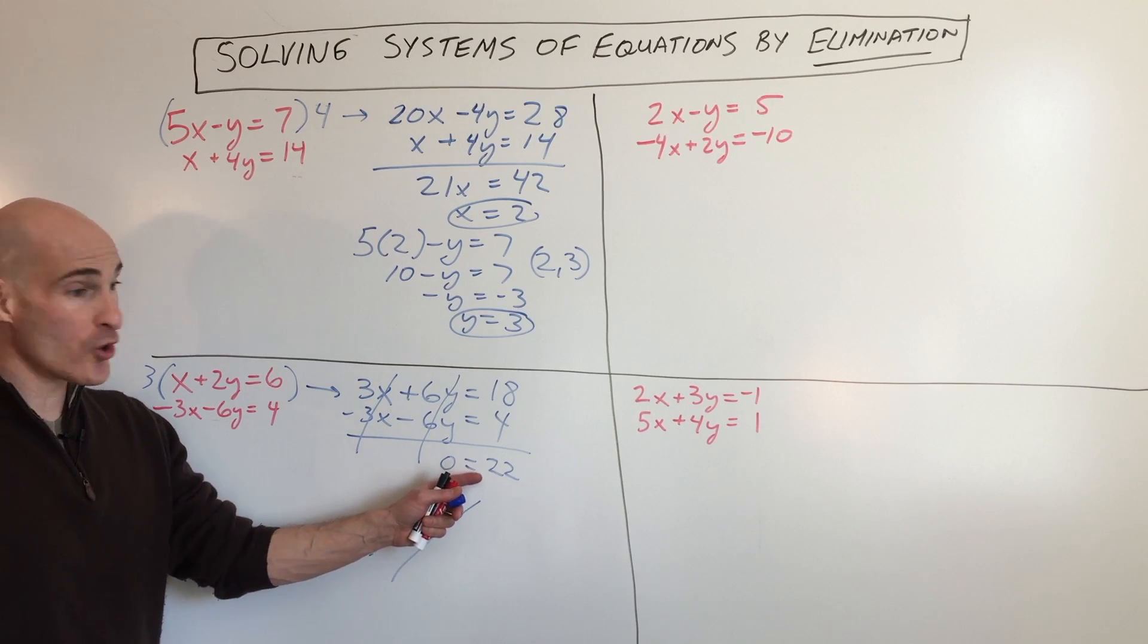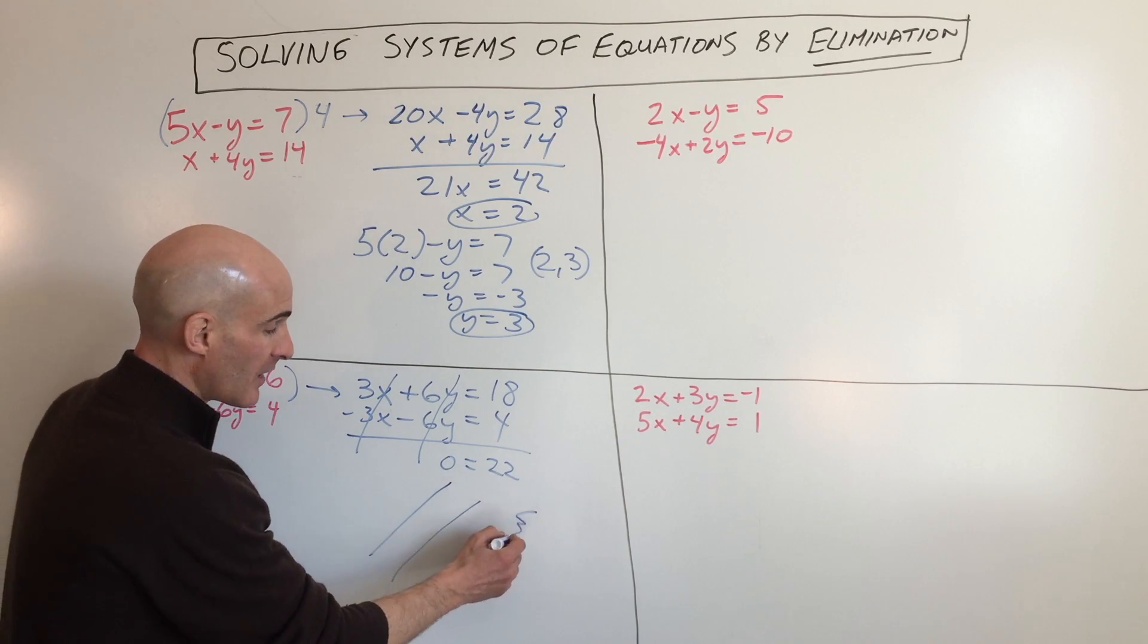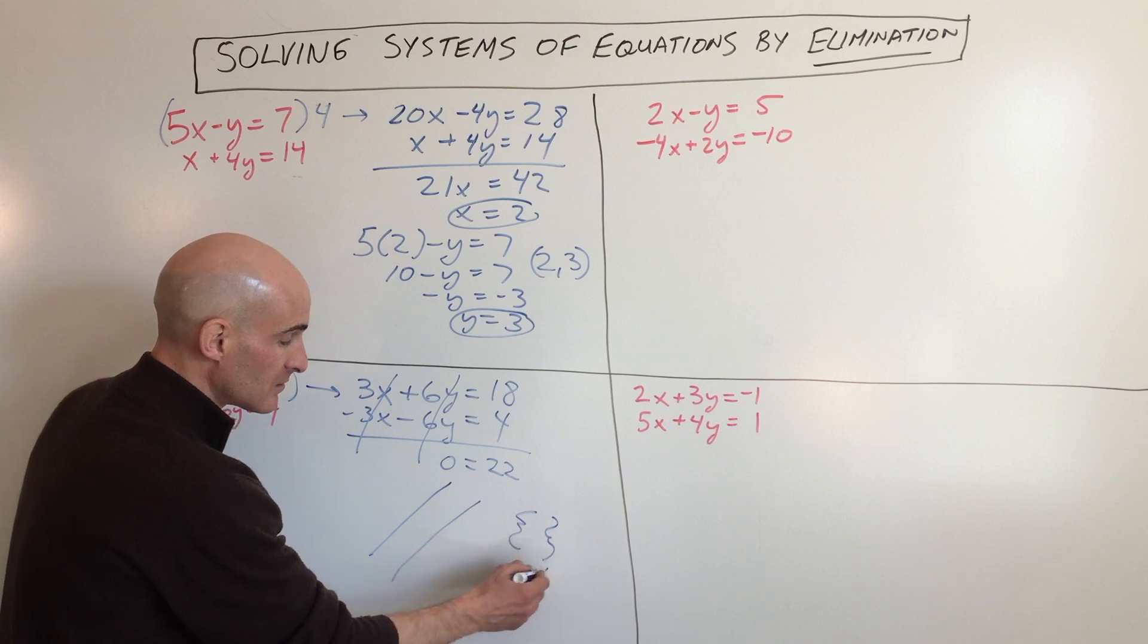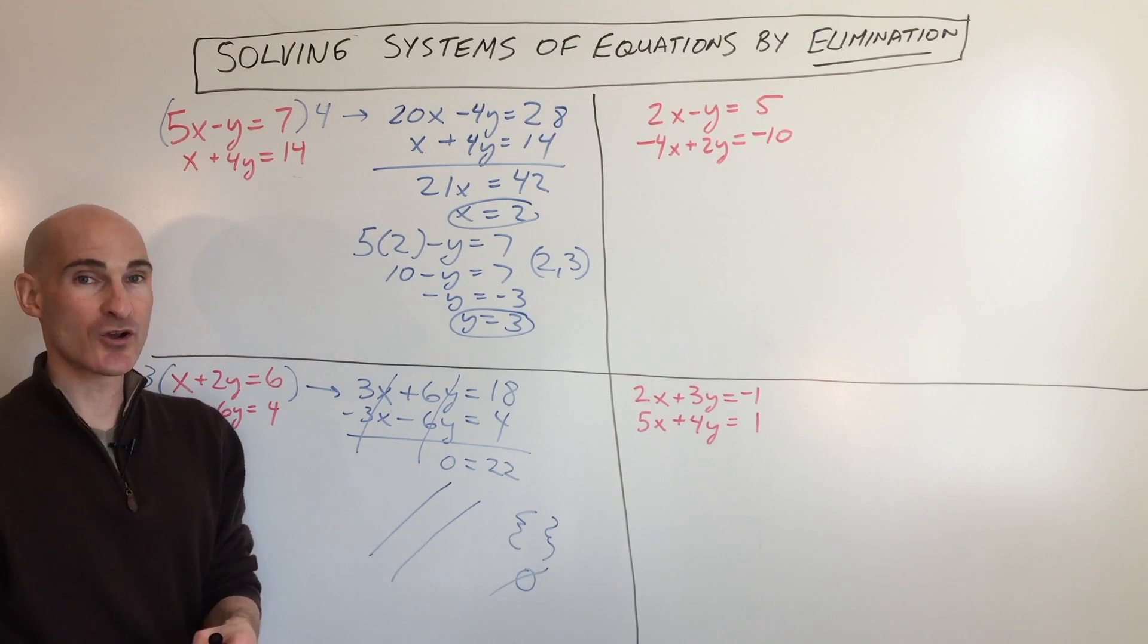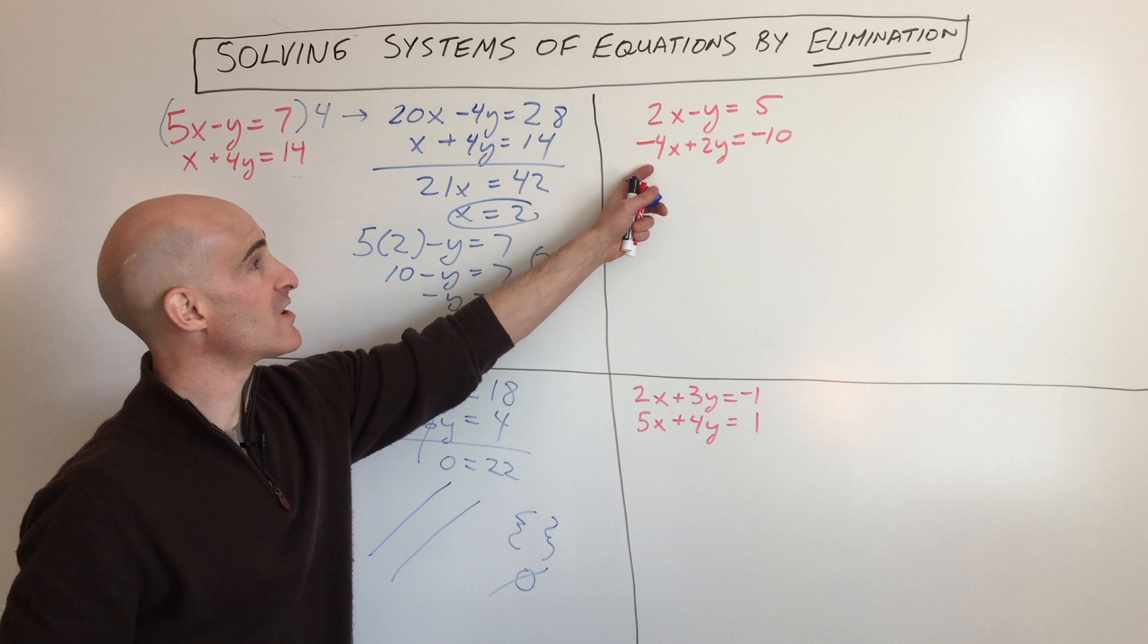They don't cross. So this one, there's no solution. So empty set, no solution, or you can just write no solution. This next one over here...